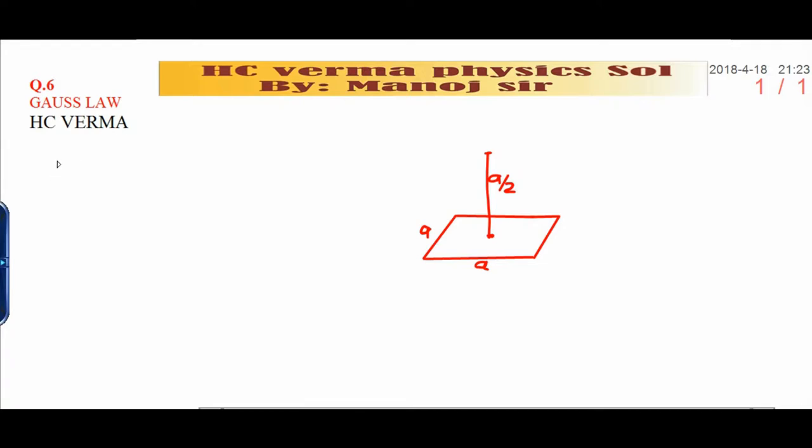Let's see what is given in the question. A charge Q is placed at a distance of A by 2 from the center of a horizontal square surface.